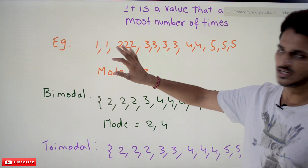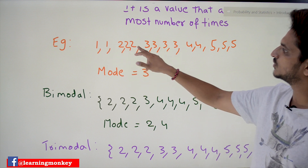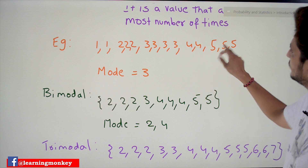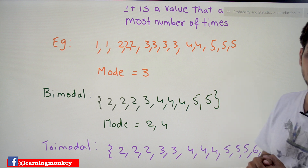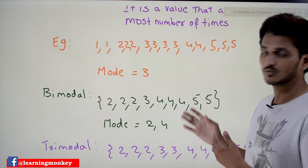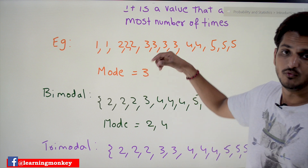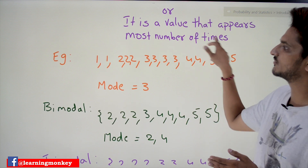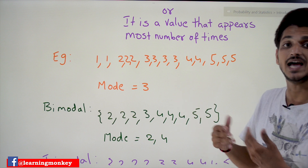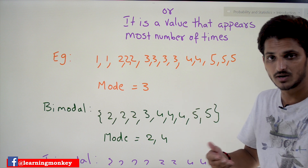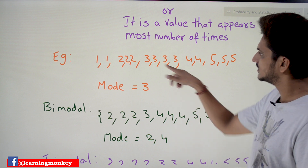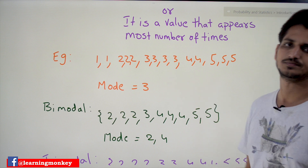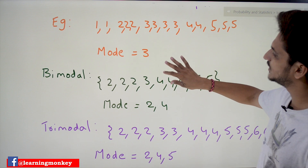The given set of data is: 1, 1, 2, 2, 2, 3, 3, 3, 3, 4, 4, 5, 5, 5. Mode is equal to the value that occurred most number of times — that is, the highest frequency value. Here, three occurred four times, so mode equals 3.